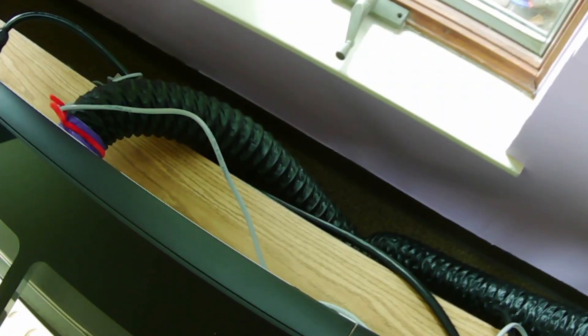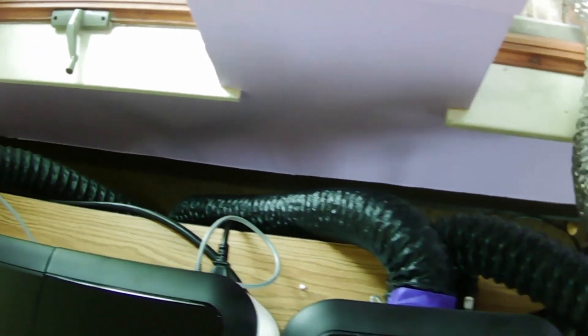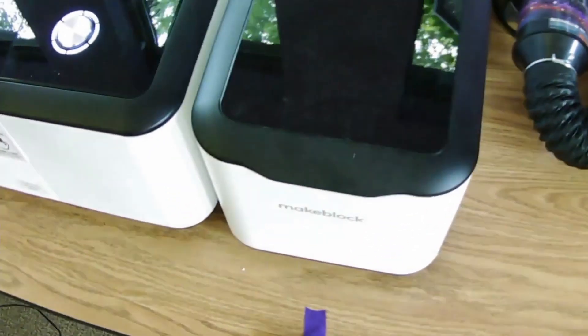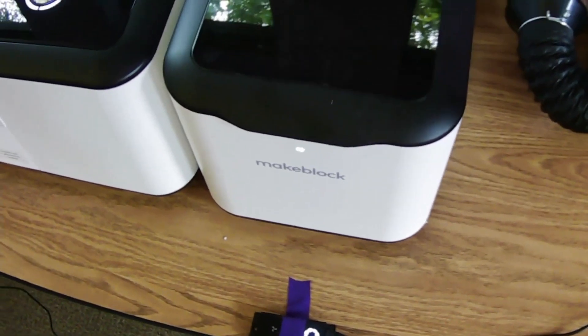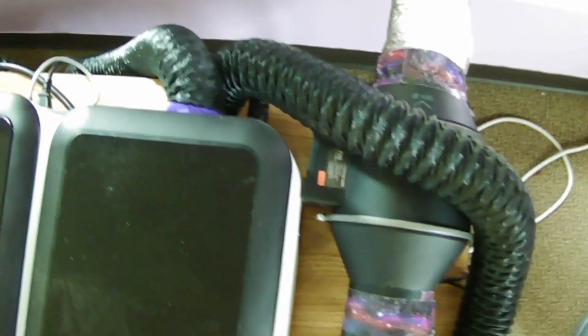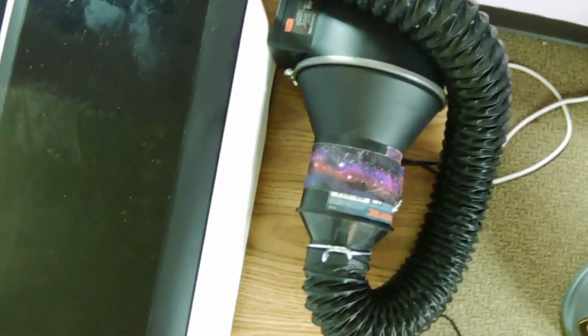Here we have the back of the Laserbox Pro. You can see that I am using the original venting from the back of the Laserbox Pro over and into the Laserbox purifier. From there I am taking the output and going through the AC Infinity.